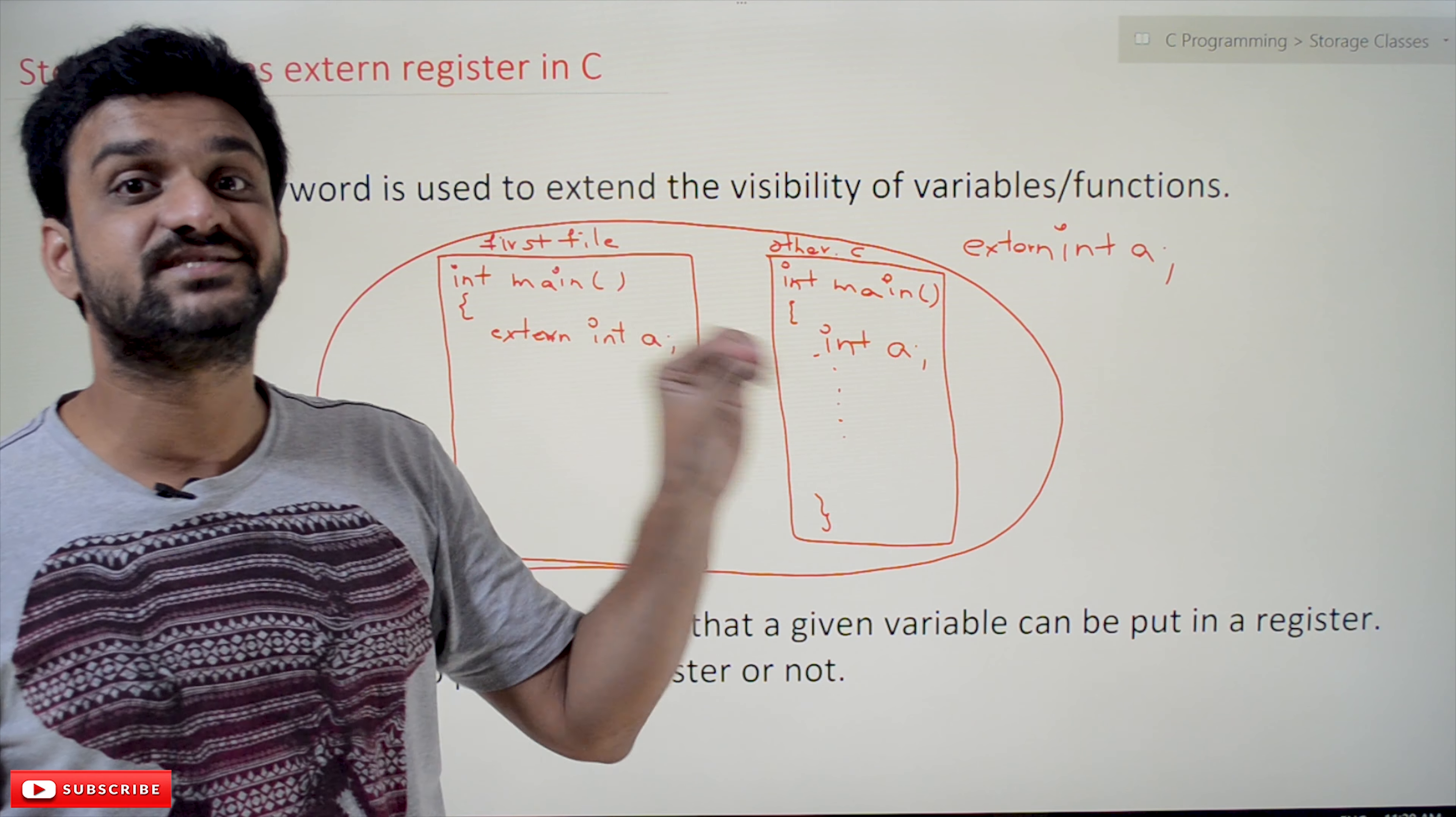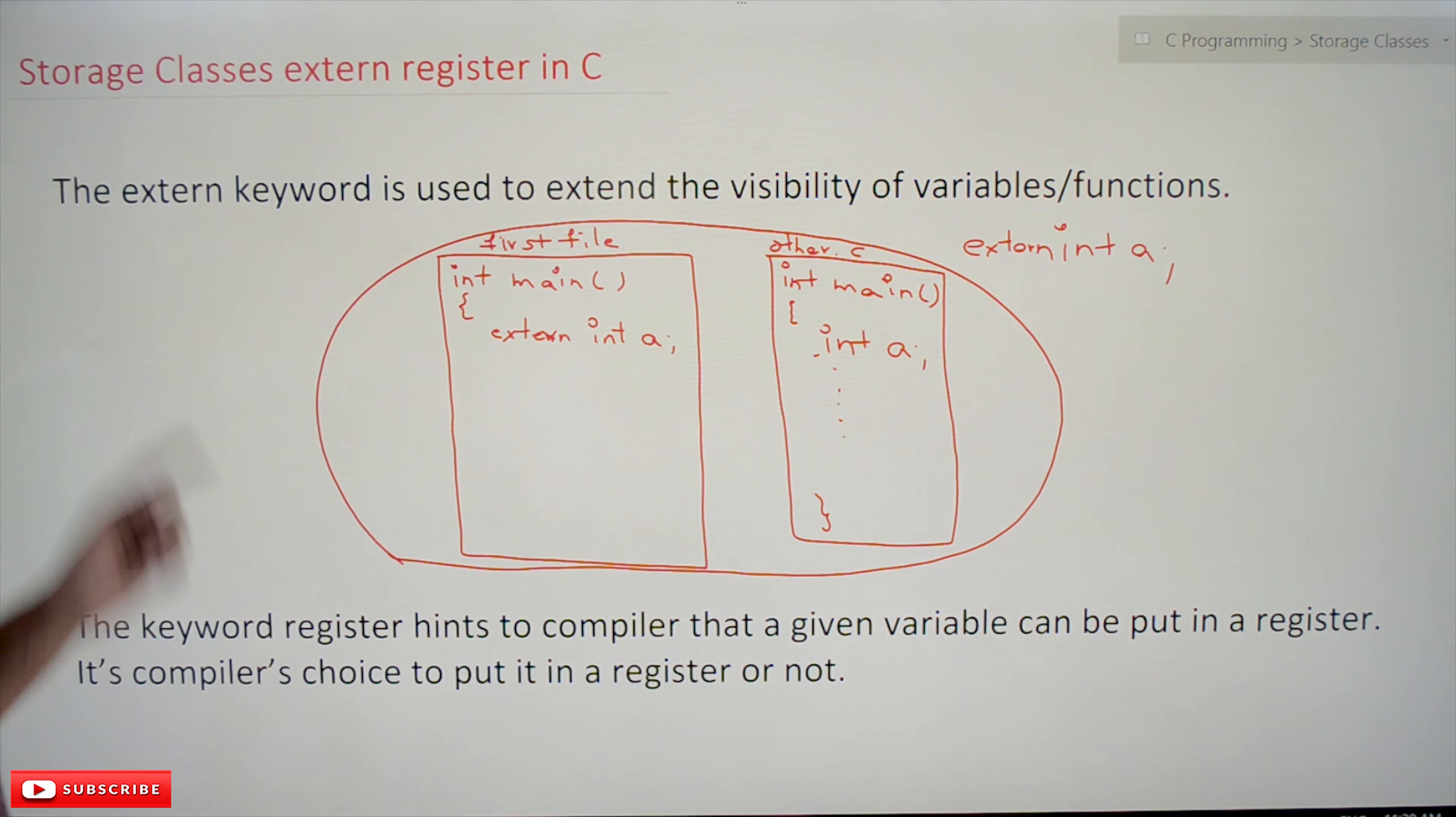So what you have to understand is int a means defined, storage is provided. Extern int a means it is just declared.